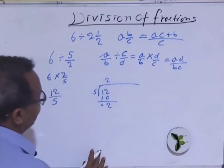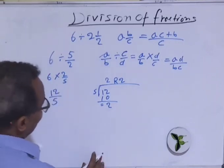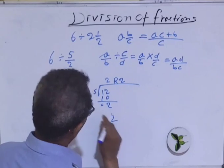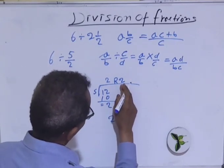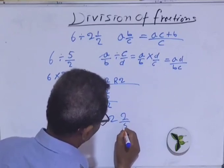2 times 5 is 10, and 2 is the remainder. So we've got 2, the quotient number is 2. And 2 is not yet divided by 5, so it stays over 5, 2 over 5.